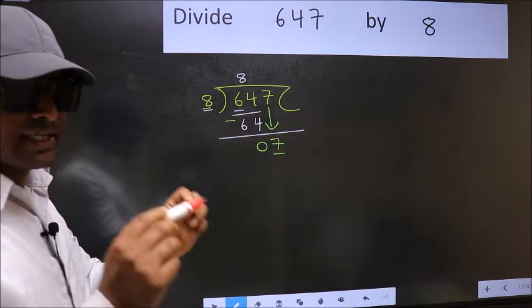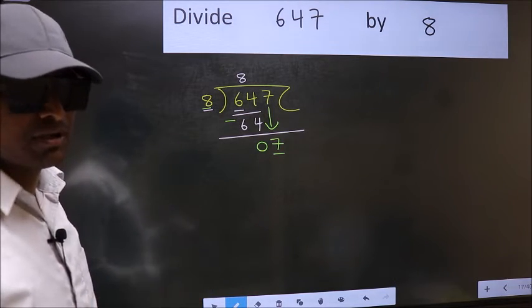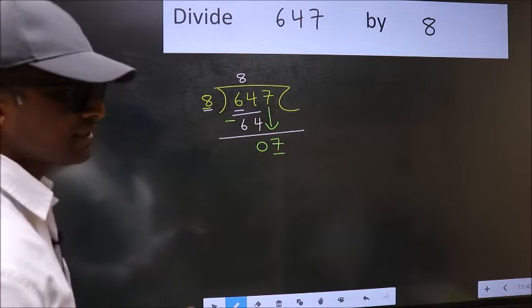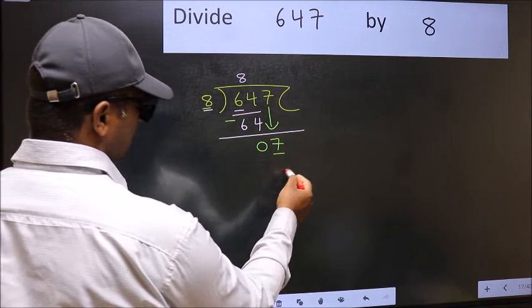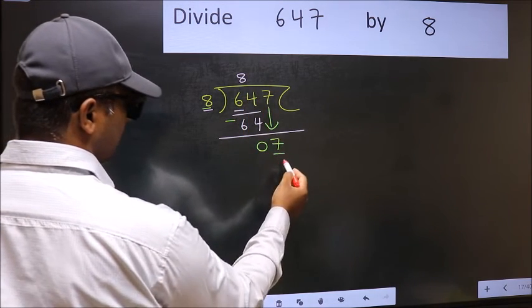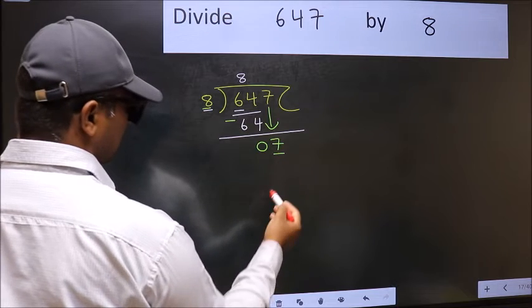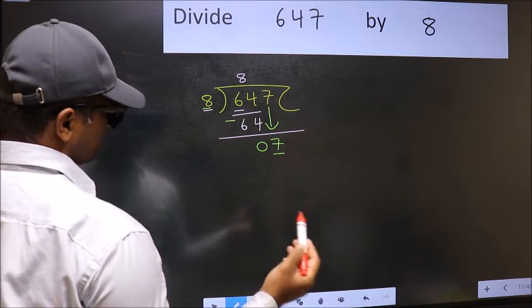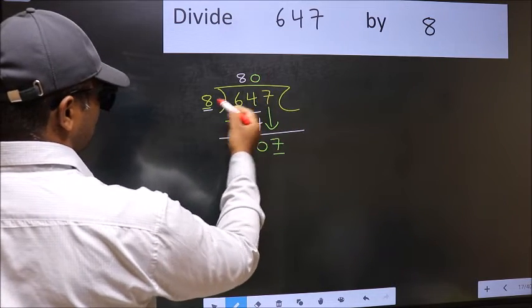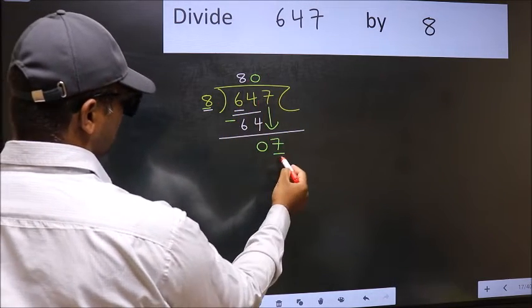Instead, what you should think of doing is which number should we take here? If I take 1, we will get 8, but 8 is larger than 7. So we should take 0. So 8 into 0 is 0.